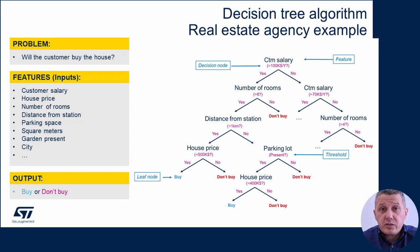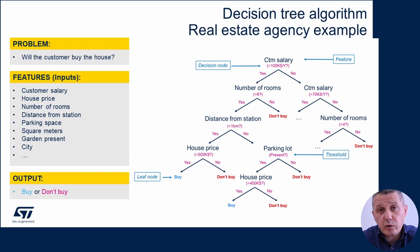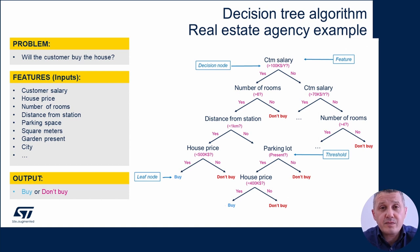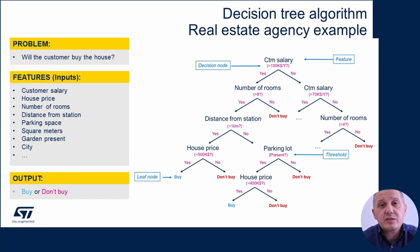Let's jump into an example often used in the machine learning world: the real estate agency example. We need to define three key points: the problem, the features or inputs to the algorithm, and the desired output. The problem is to understand if a customer will buy or not buy a house. The features or inputs are information we think is relevant, like the cost of the house, the number of rooms, the distance from the station, and so on. The desired output is whether the customer will buy or not — so this is a binary classification problem.